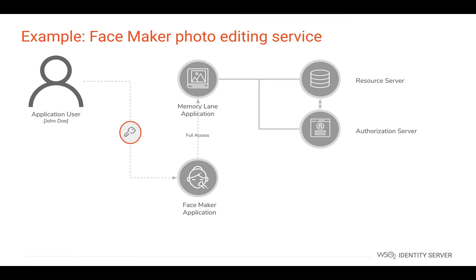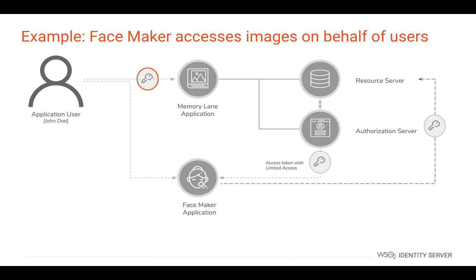Imagine you want to edit the photographs that are stored in MemoryLane using Facemaker. To do this, Facemaker requires access to MemoryLane's resource server. The simplest way to do this is to provide the login credentials to the Facemaker application so that Facemaker can directly access the photographs in the MemoryLane service. This is similar to how users gain access by providing login credentials. But this is not a secure mechanism as there's no guarantee about what Facemaker will do to your photographs. The worst case scenario is that Facemaker can even delete your photographs without your consent. To avoid this we need to grant limited access to Facemaker. Similar to the valet key case, if we can get a token from the MemoryLane service with limited access, we can give that token to the Facemaker application to access the photographs without performing any restricted operations.